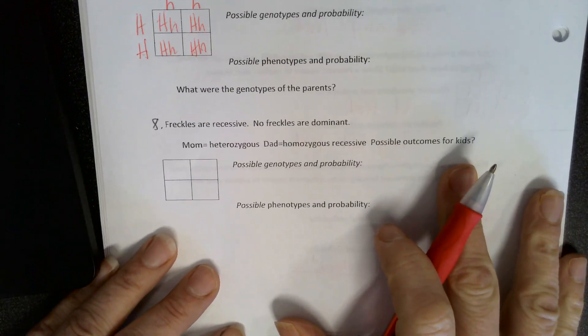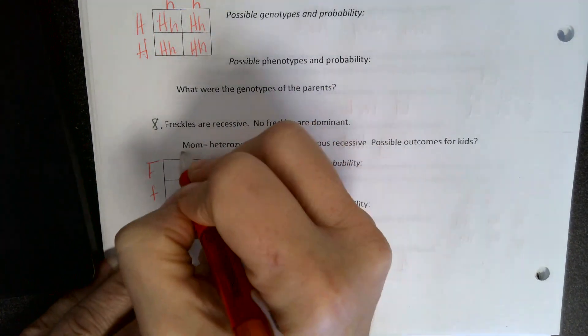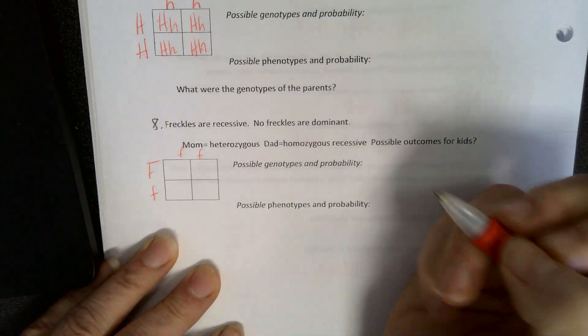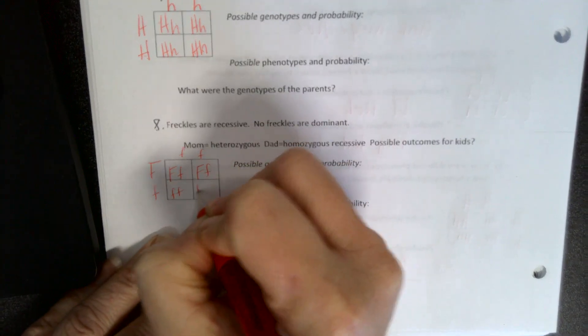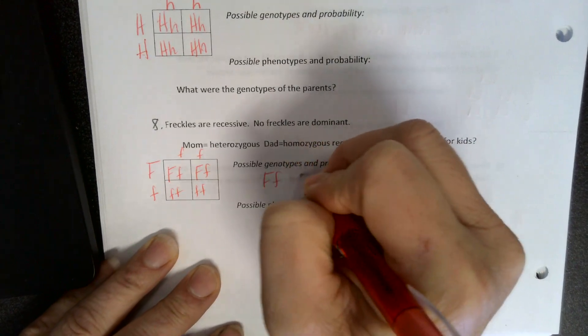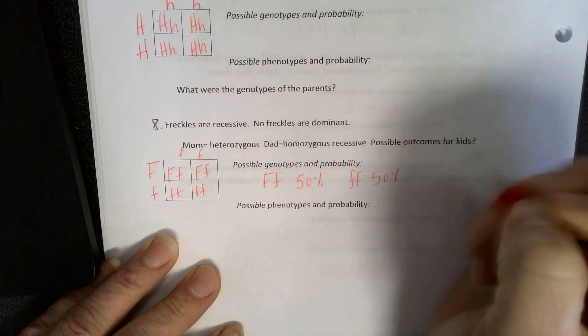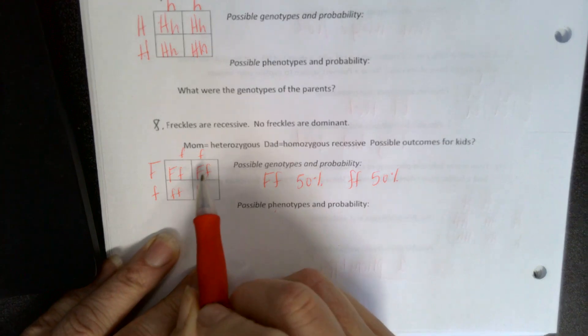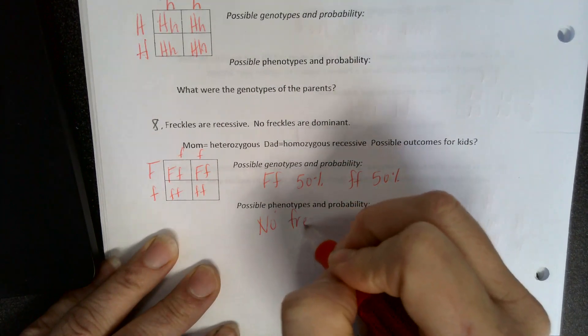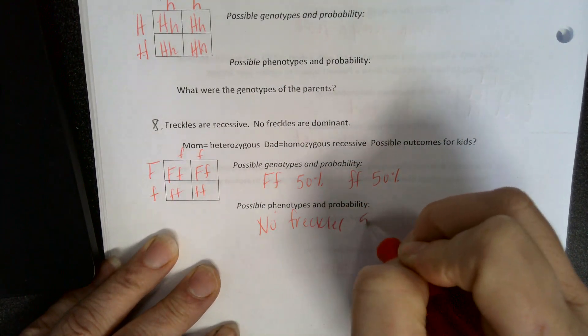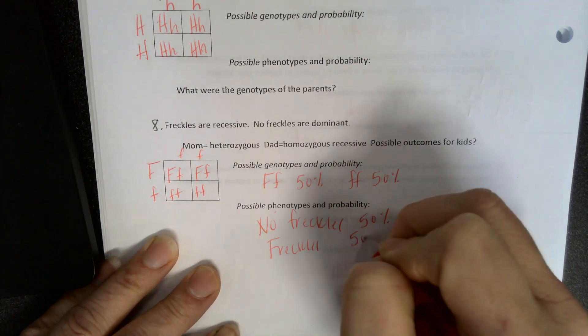Okay, freckles are recessive. No freckles dominant. Mom is heterozygous. Dad is homozygous recessive. So if we do this, you have two possible genotypes at 50%. Does this mean how they look? Okay, so no freckles are dominant, so that means you're going to have no freckles 50% of the time, and then freckles 50%. Okay.